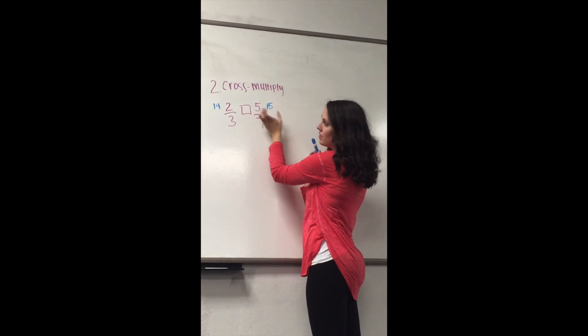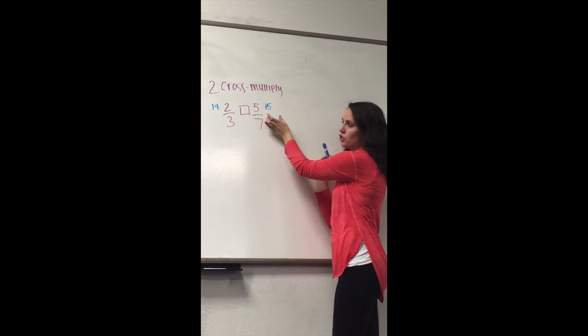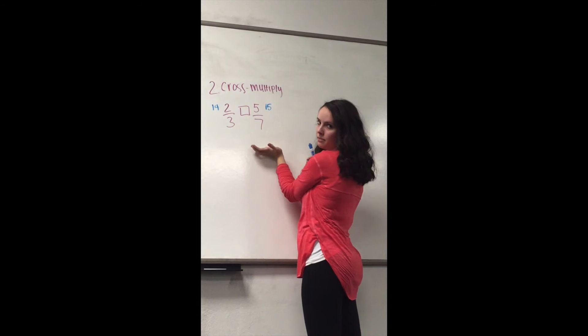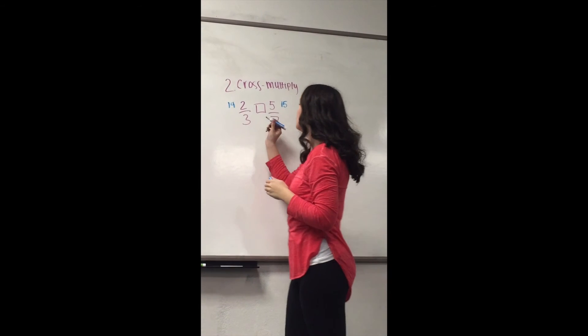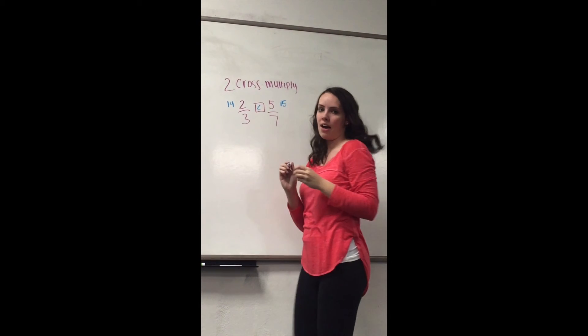Bottom up, 3 times 5 is 15. And then you're just going to compare the two numbers, which is greater, 14 or 15? So therefore, 2 thirds is less than 5 sevenths.